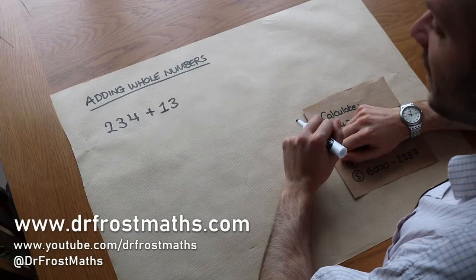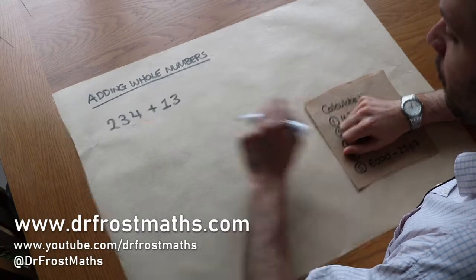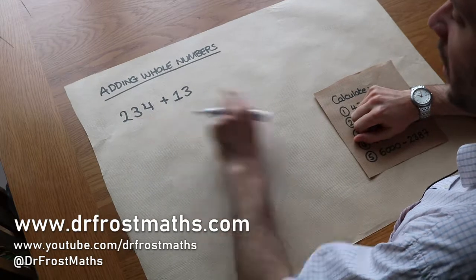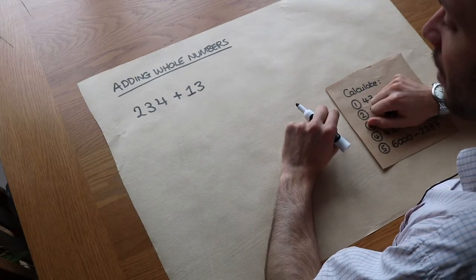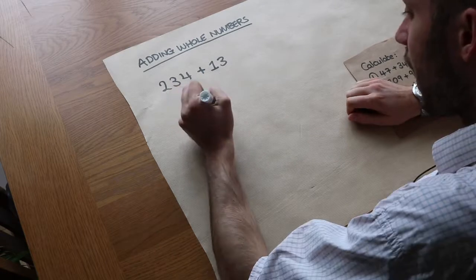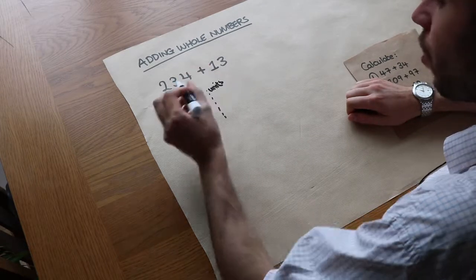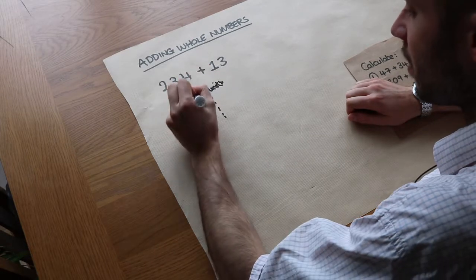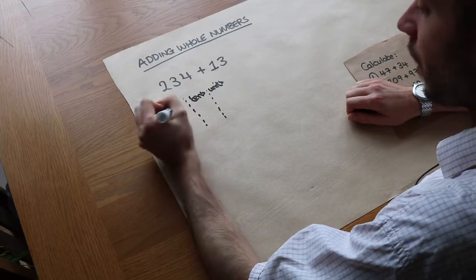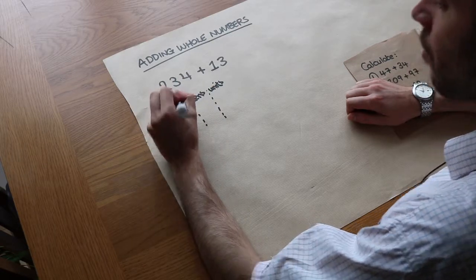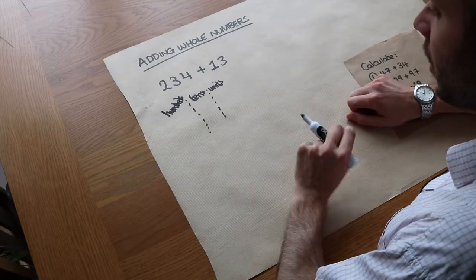Hello and welcome to this video on adding whole numbers. The key to adding numbers when we have more than one digit in each is to look at the place value. So if we have a column for the units digit, a column for the tens digit, and a column for the hundreds digit, we just arrange our numbers into those columns.